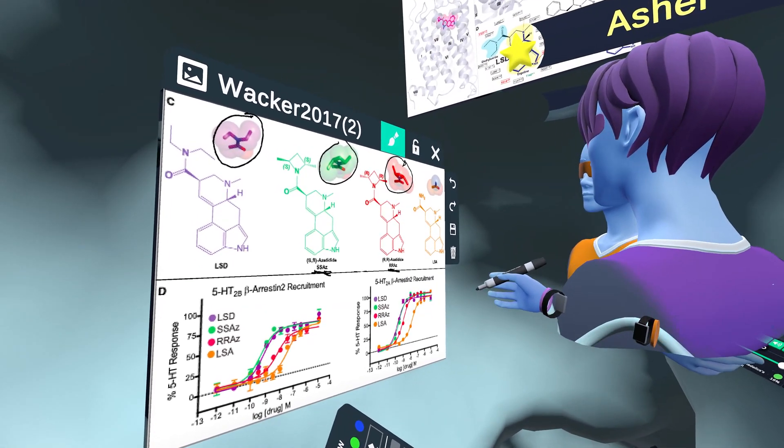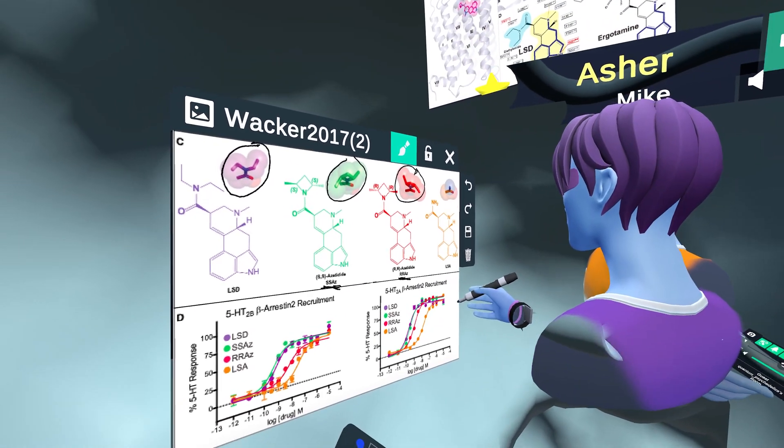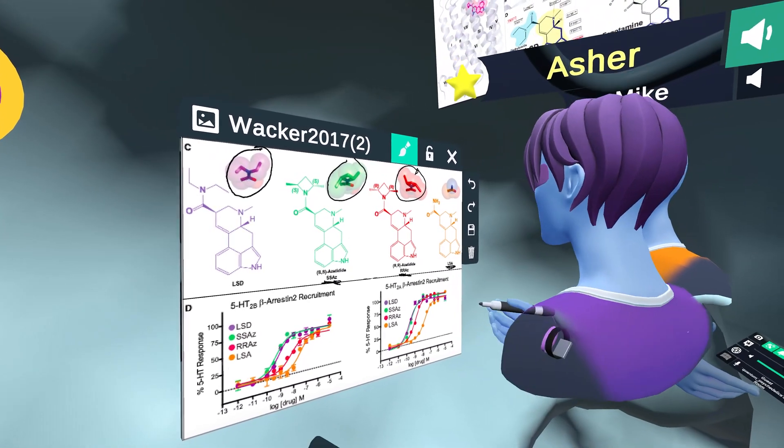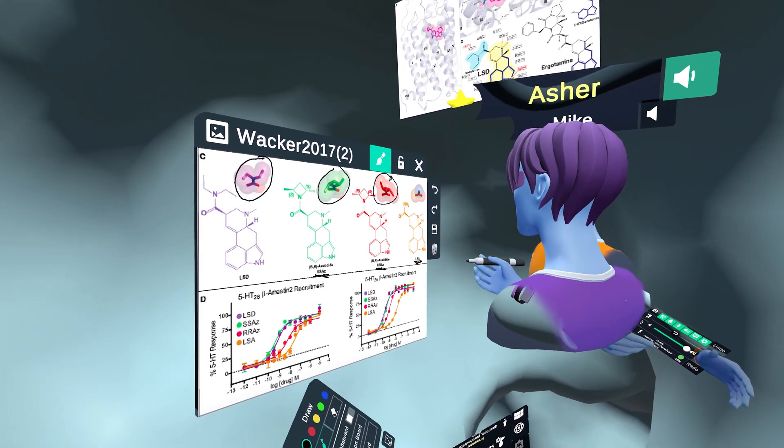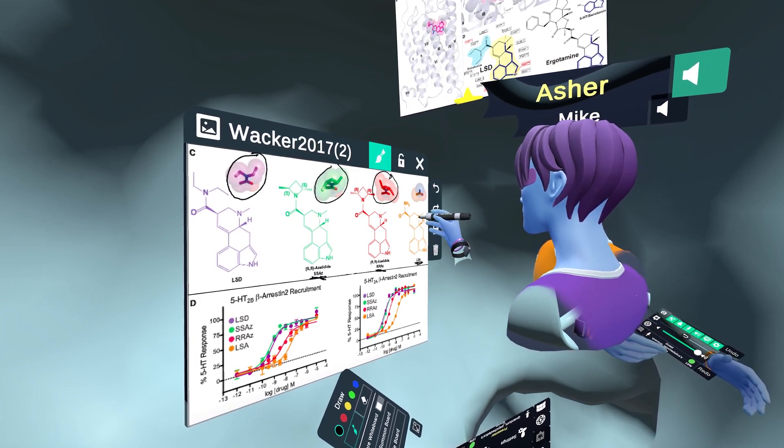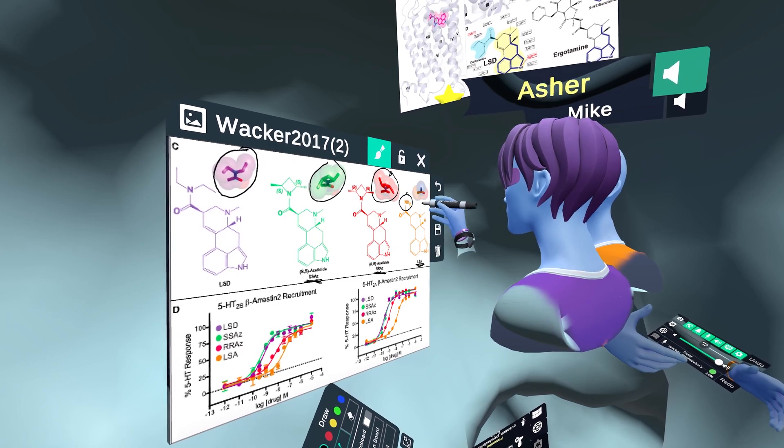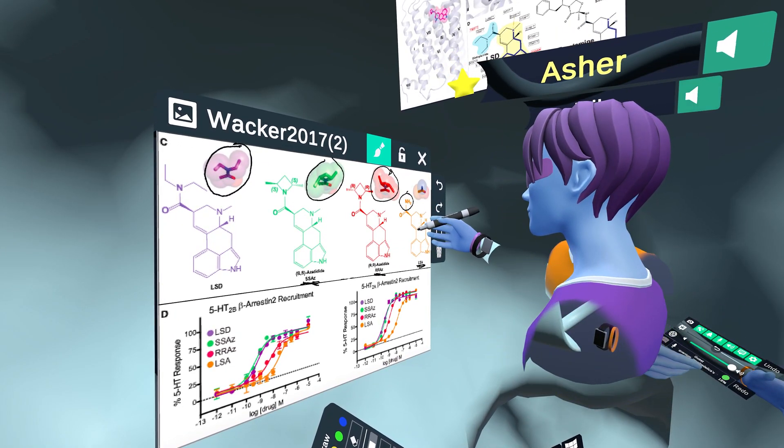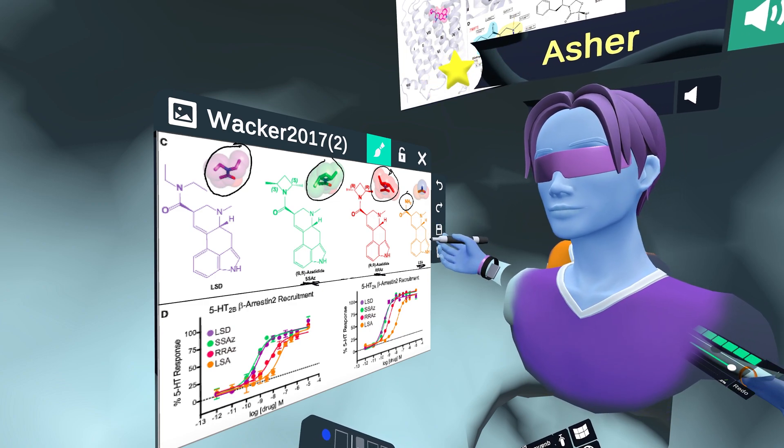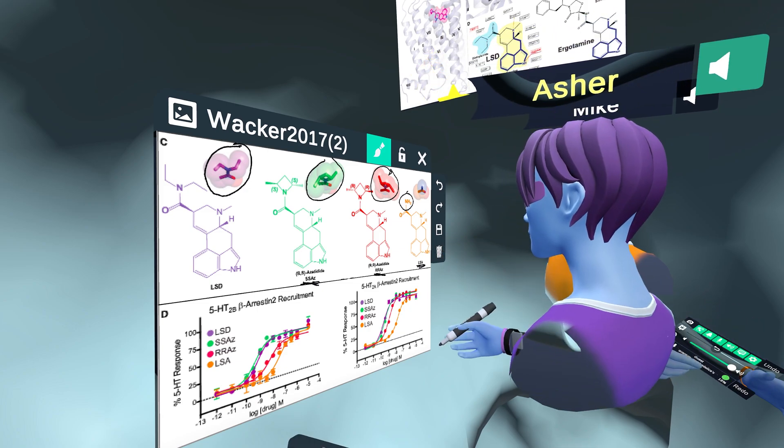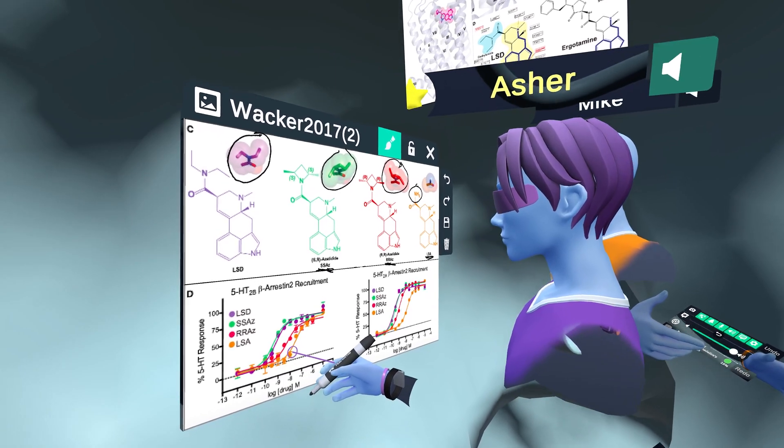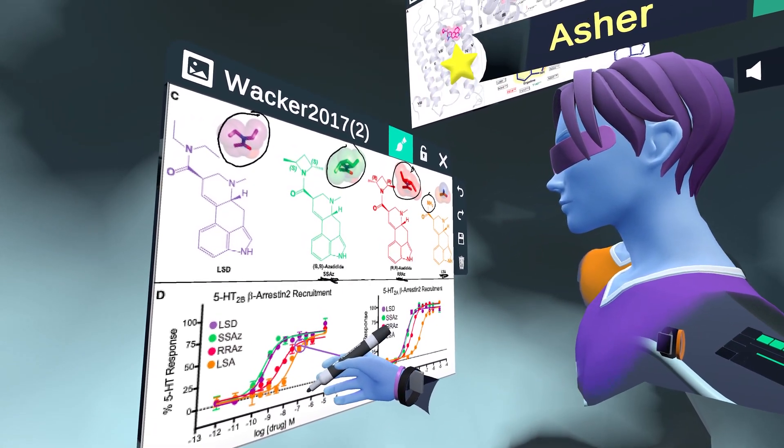The last thing they do is use this compound called LSA. This is actually not a synthetic compound. This is from a seed called Hawaiian baby woodrose. People actually use it as a psychedelic, although it's a pretty unpleasant experience from my own experience. So this doesn't have a diethylamide group at all right here. If we look at right here, this does not have a diethylamide group. It has two hydrogens coming off. Two hydrogens are really small. They're not going to dock inside the receptor the same as two ethyl groups. So notice how the potency even drops off way more of this compound in orange. It's even weaker than the RRAZ derivative.